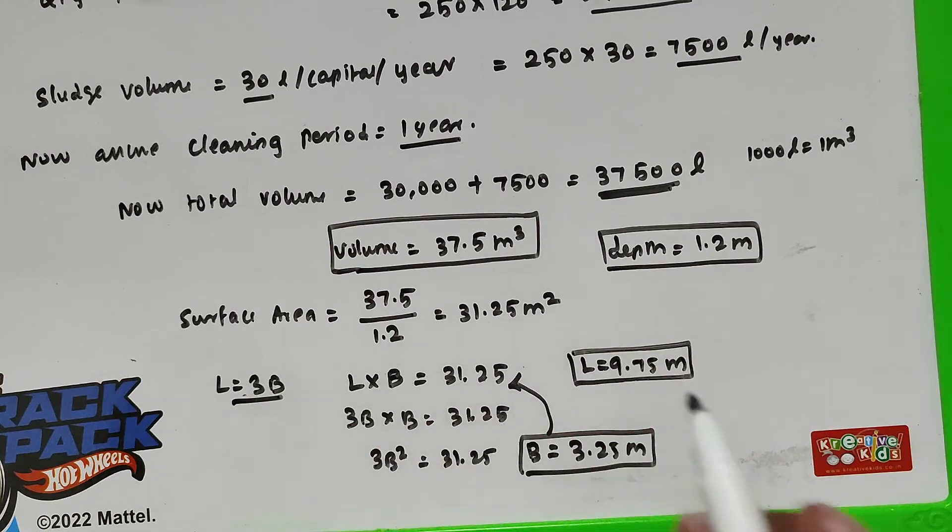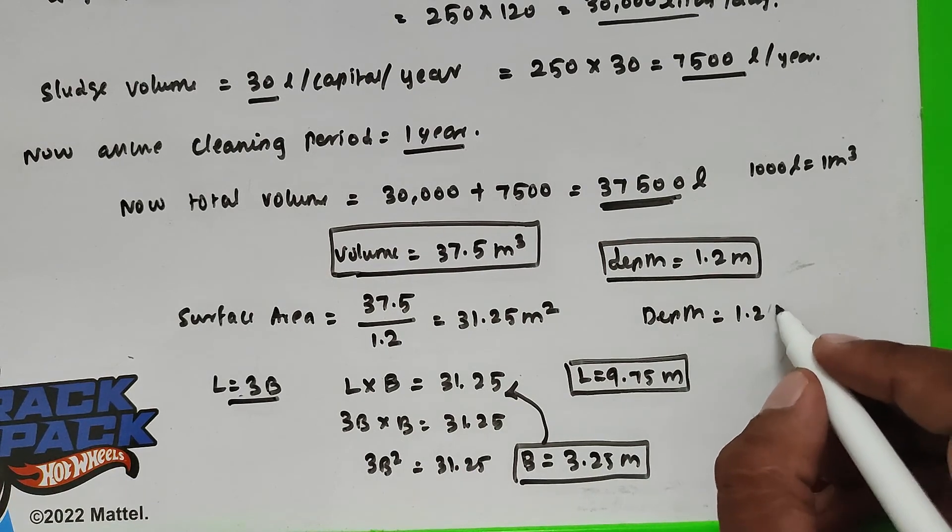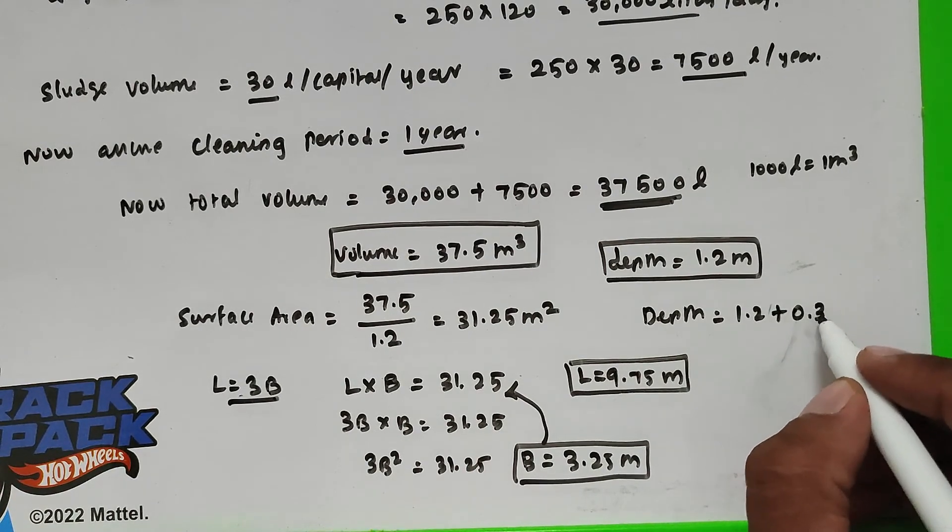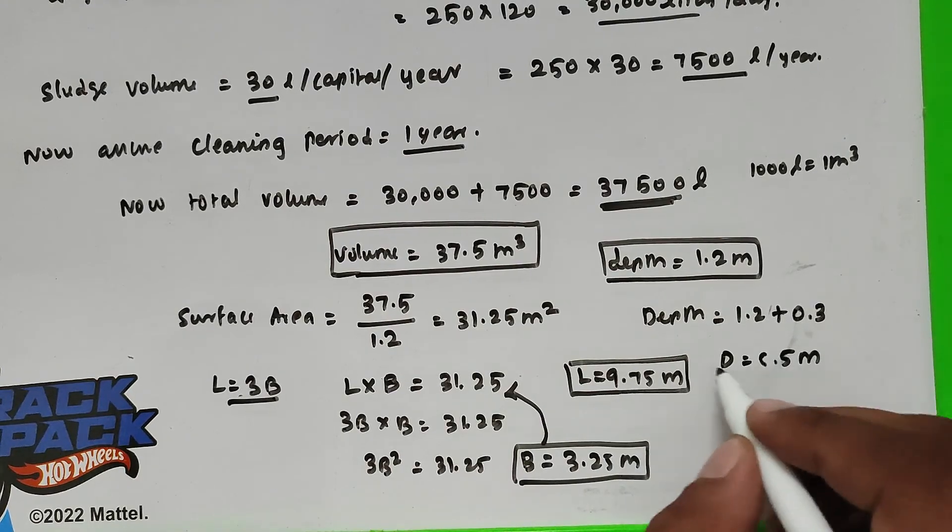The depth is 1.2 meter plus the freeboard is 0.3 meter. So the total depth equals 1.5 meter.